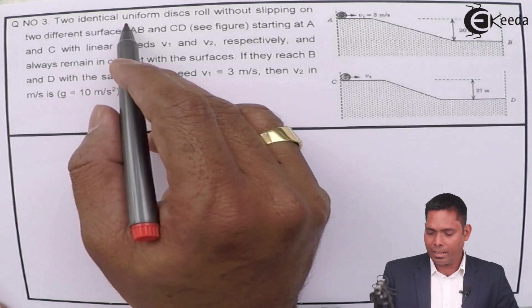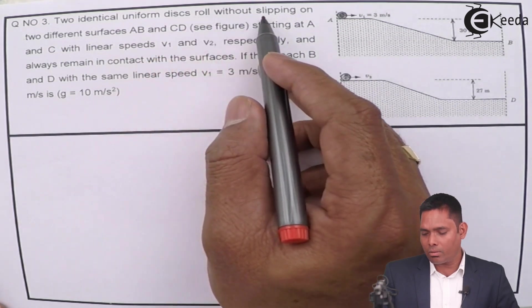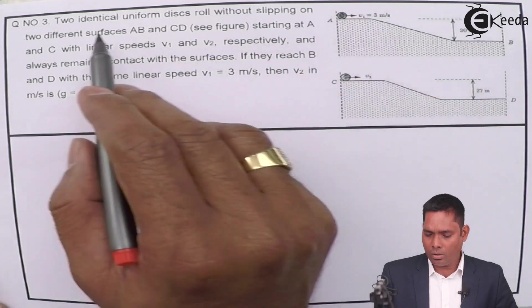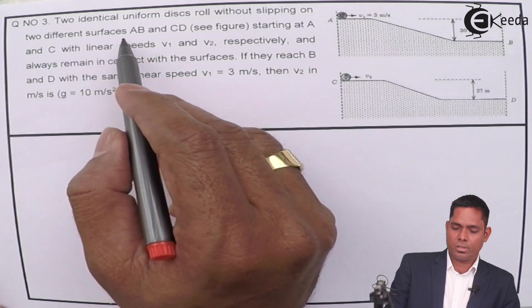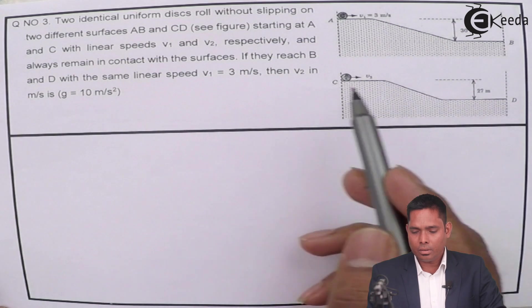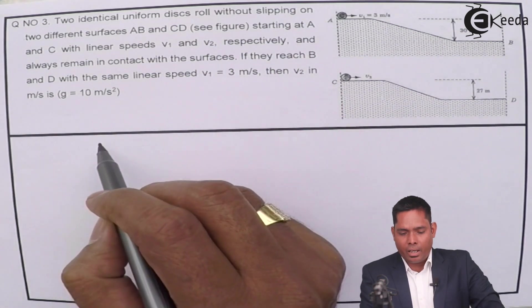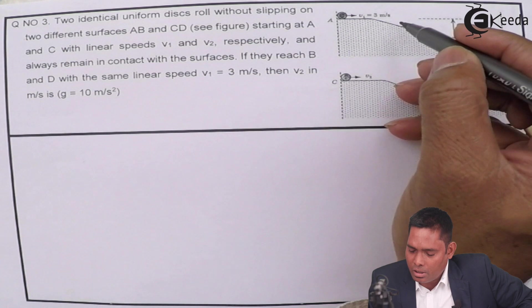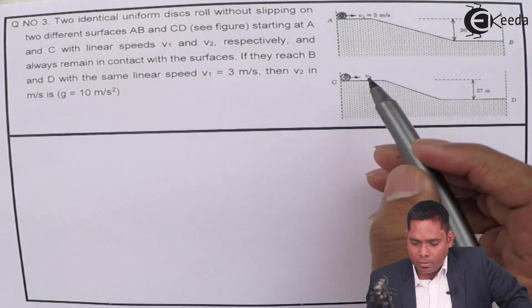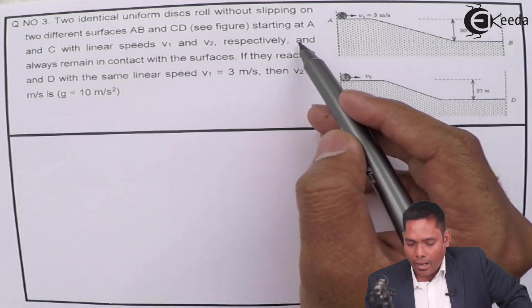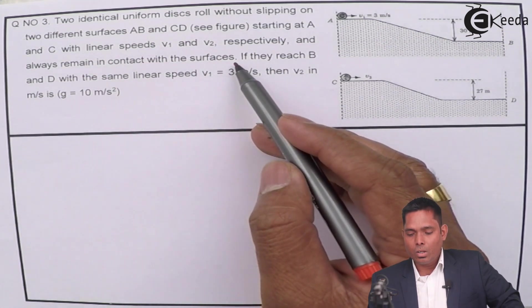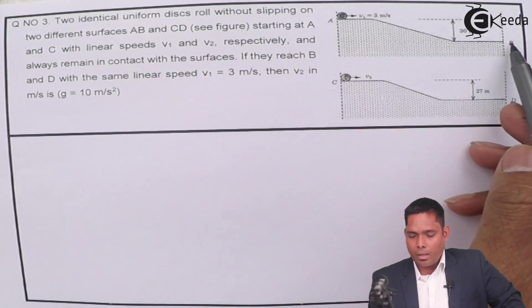The question says two identical uniform discs roll without slipping. These are the two discs over here. Rolls without slipping on two different surfaces, AB and CD. And always remain in contact with the surface.